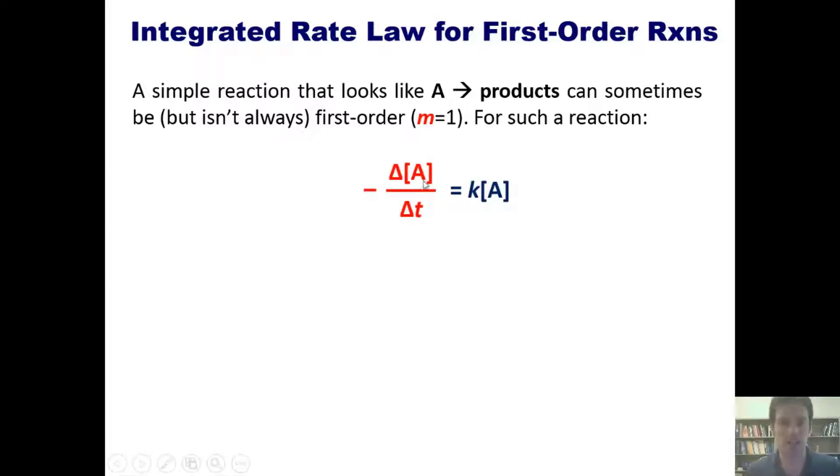For such a reaction, negative change in concentration of A over delta t is equal to k times the concentration of A. In other words, this component, which comes from the relative reaction rate equation, and this component, which comes from the general rate law equation, happen to equal each other.